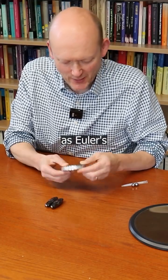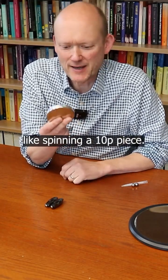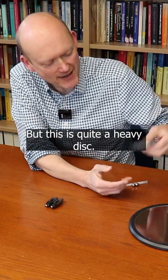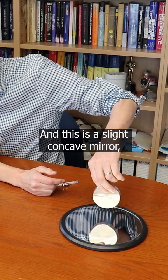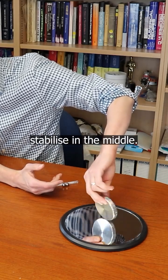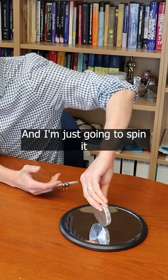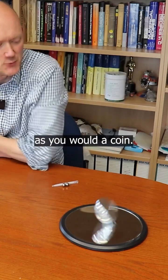So this is a little toy known as Euler's disc. It's essentially like spinning a 10p piece, but this is quite a heavy disc and this is a slightly concave mirror which just helps it to stabilize in the middle. And I'm just going to spin it as you would a coin.